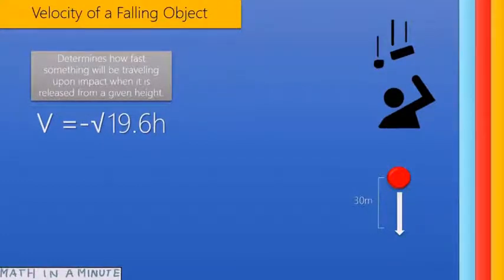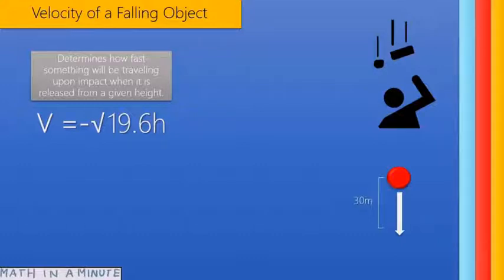The formula is v equals the negative square root of 19.6h, where v equals velocity and h equals distance. The velocity will always be in meters per second. Note the negative sign in front of the square root of 19.6h — a negative velocity indicates the object is traveling downwards.